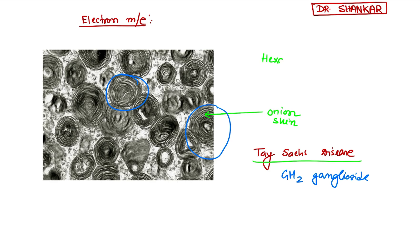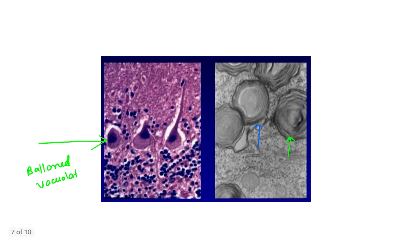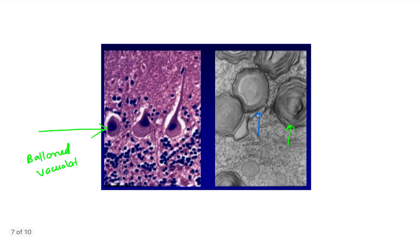Tay-Sachs disease occurs because of a hexosaminidase-A enzyme defect. Here is another picture of Tay-Sachs disease showing another typical finding — ballooned and vacuolated nerve endings. Ballooned and vacuolated nerve endings are also suggestive of Tay-Sachs disease in nerve biopsy on electron microscopy.